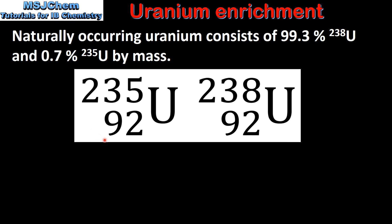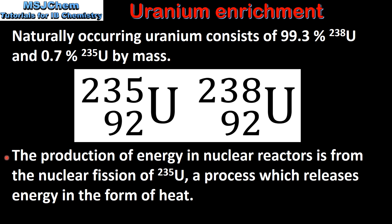As they are isotopes they have the same number of protons but a different number of neutrons which gives them different masses. The production of energy in nuclear reactors is from the nuclear fission of uranium-235, a process which releases energy in the form of heat.